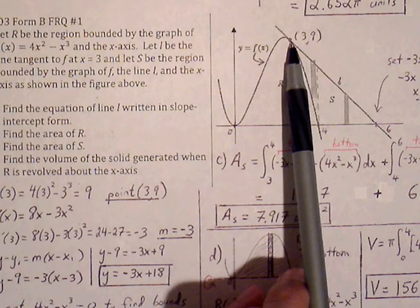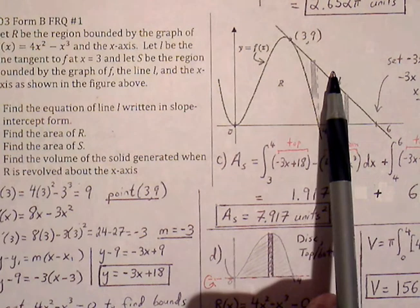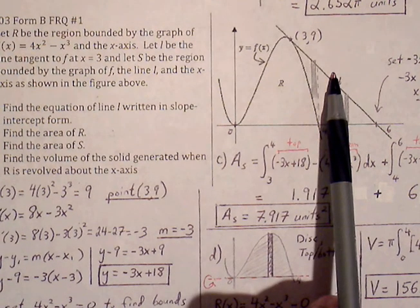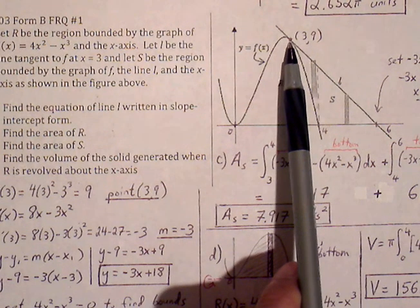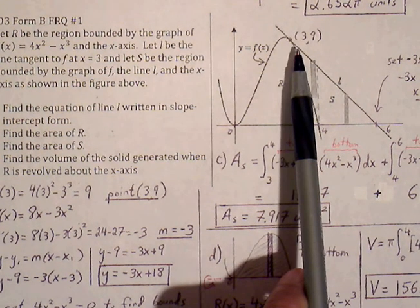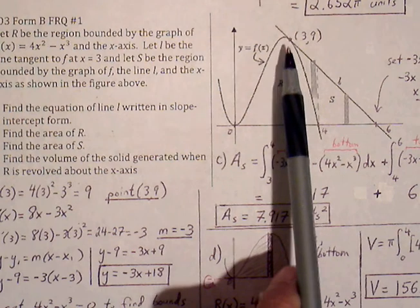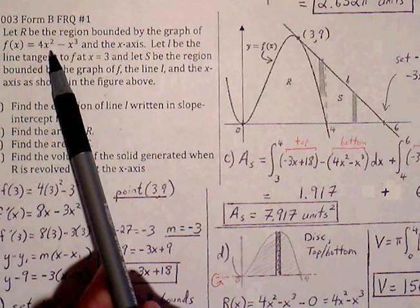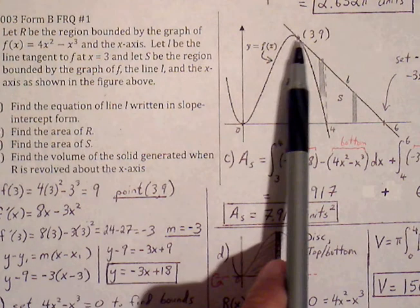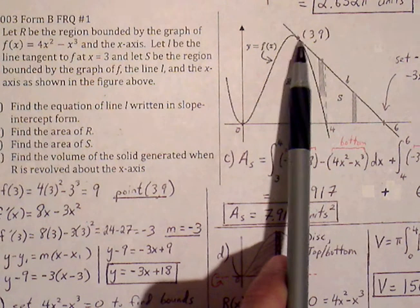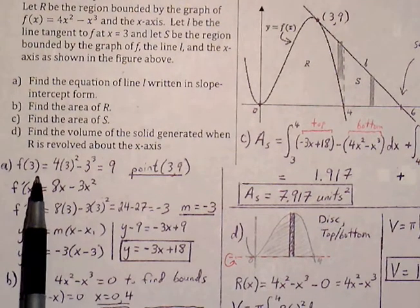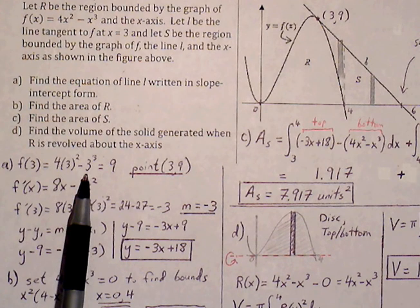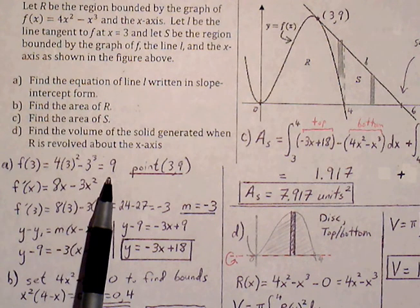To find the equation of a tangent line, we need two pieces of information: the ordered pair and the slope. We know the x value is 3. Since the line is tangent to the curve, they share the same point. Plugging x equals 3 into the function gives us 4 times 9 minus 27, which is 36 minus 27 equals 9. So our ordered pair is (3, 9).